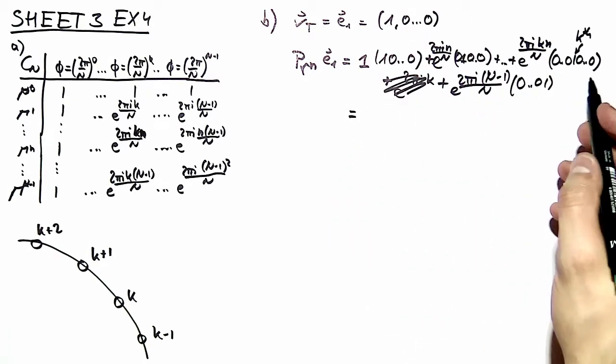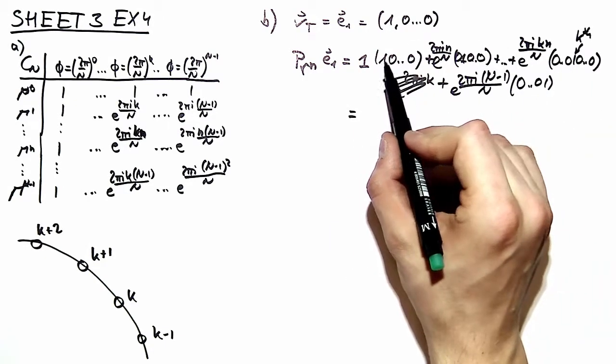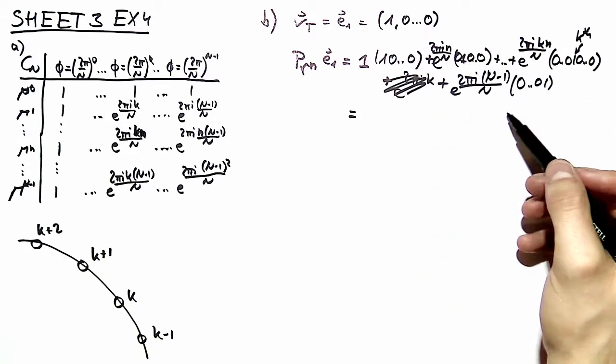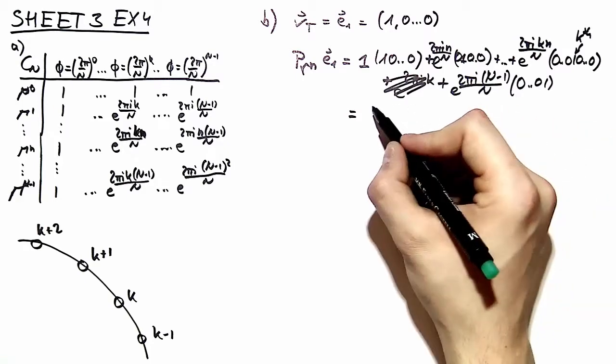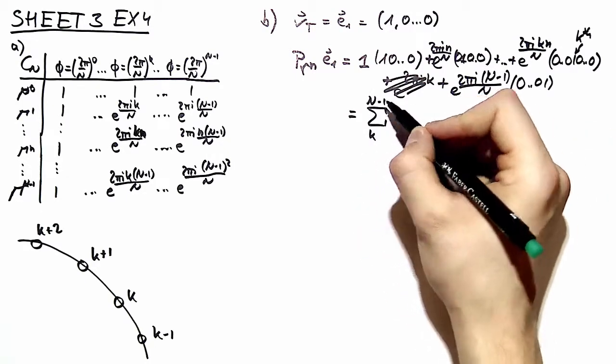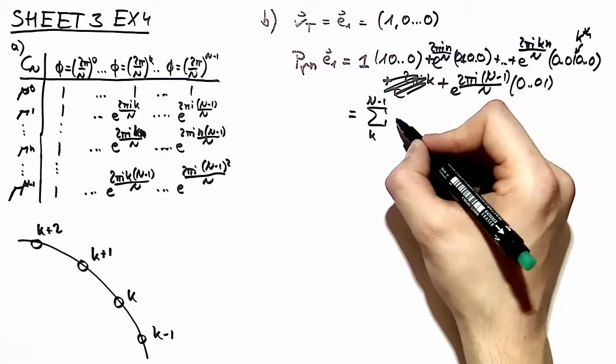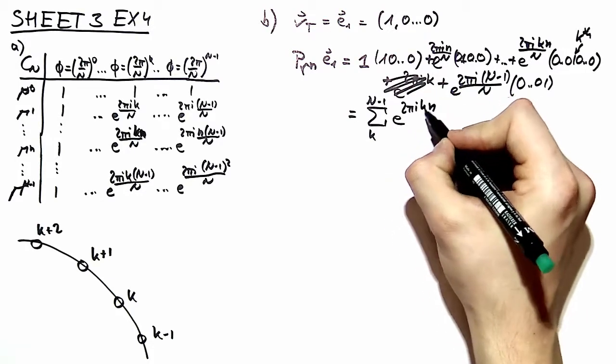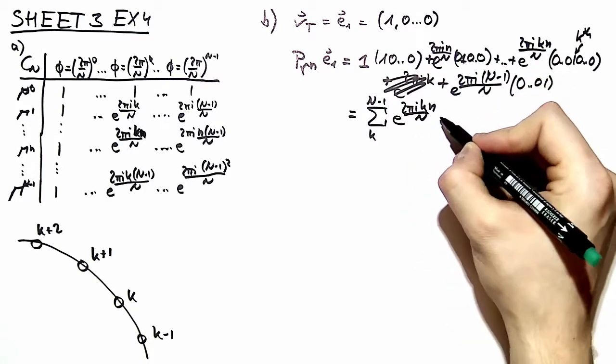We can rewrite all this because we recognize this is e1, this is e2, this is eK, this is eN. So we can write that as a sum over k up until N minus 1. We have that phase which is being acquired 2 pi i k n over N times eK.